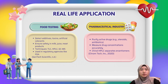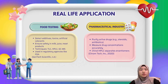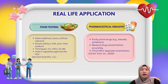The second application is the pharmaceutical industry. Chromatography is critical in the pharmaceutical world — it's used to purify active drug ingredients such as steroids and antibiotics, ensuring they're safe and effective. It also helps measure drug concentrations accurately, which is vital for proper dosing. One advanced technique, chiral HPLC, is used to separate enantiomers — molecules that are mirror images of each other — which can have very different effects in the body.